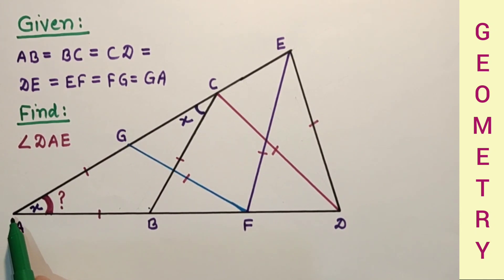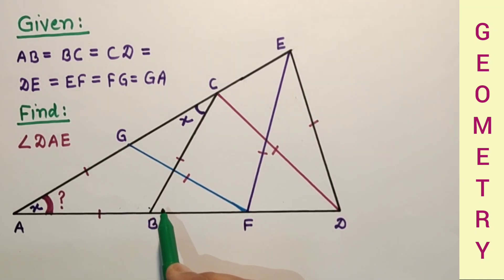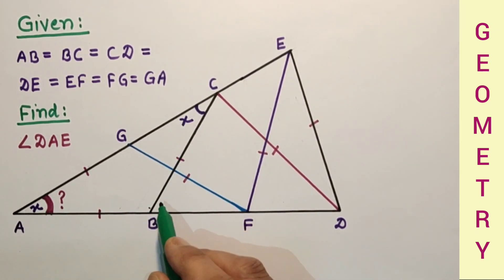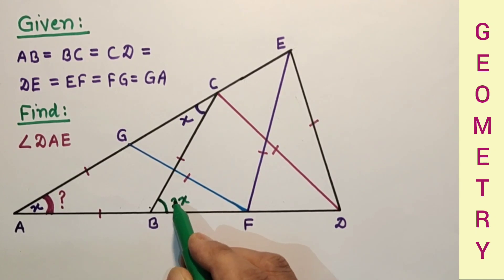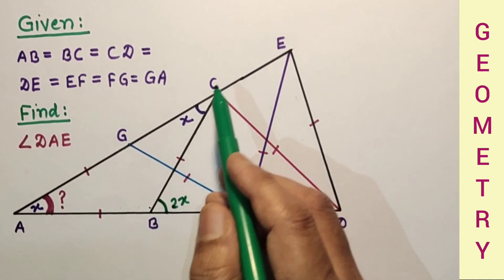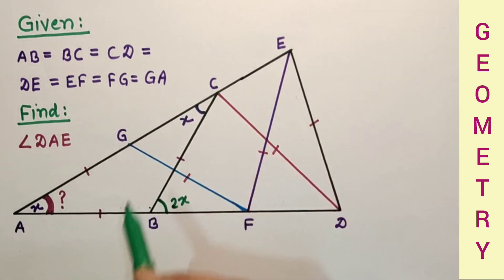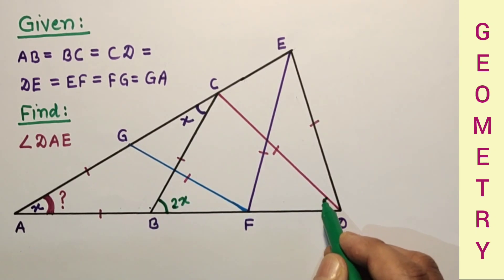Now AB is extended to BF. This angle is an exterior angle, and will be equal to the sum of the two remote interior angles. So X plus X is 2X — this angle is 2X. As we are given that BC is equal to CD, triangle CBD is an isosceles triangle, so base angles will be equal — this is also 2X.